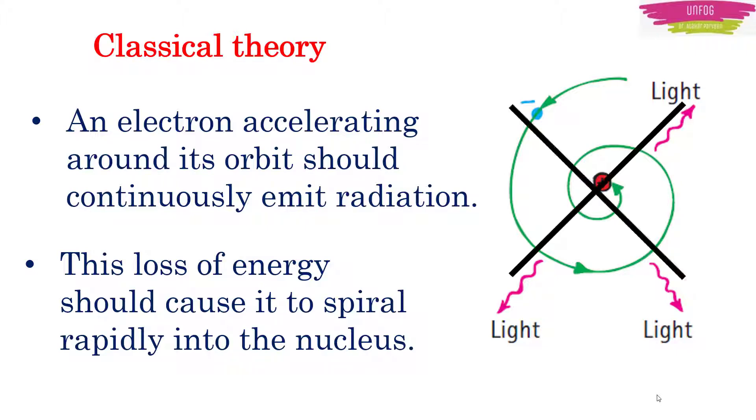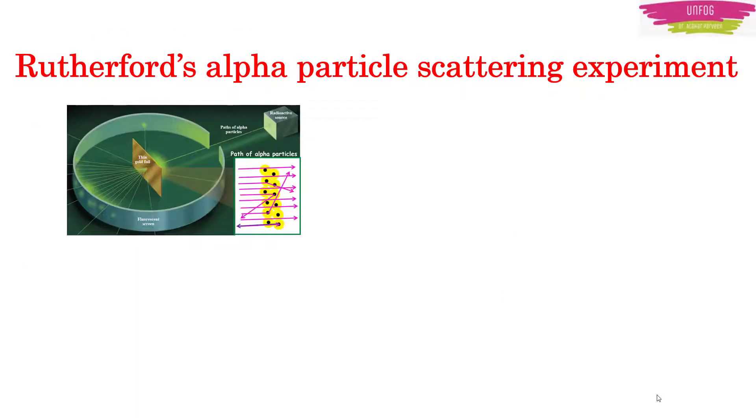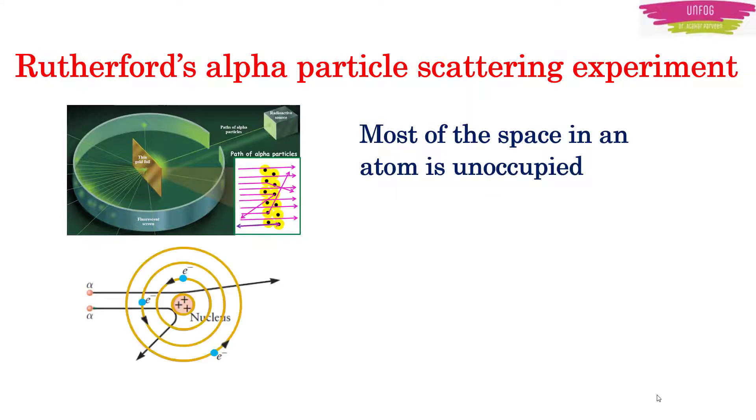But this doesn't happen. Experiments prove that this doesn't happen. The Rutherford's alpha particle scattering experiment itself shows that most of the space in an atom is unoccupied. The nucleus is at the center of the atom and the electrons revolve around the nucleus in this empty space.